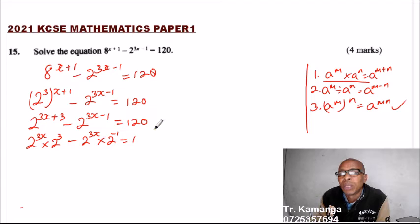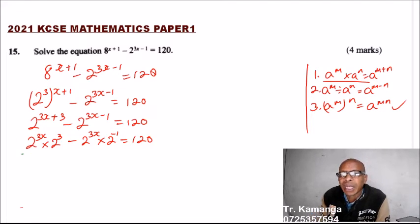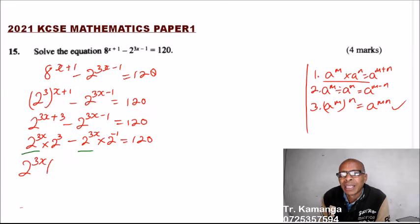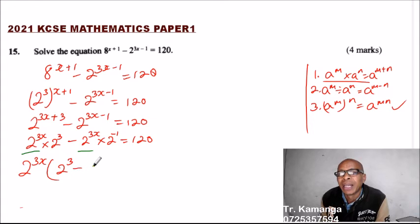You can see that 2^(3x) is common, so we factor it out. We write 2^(3x) times the bracket, leaving 2^3 minus 2^(-1) inside the bracket, equals 120.